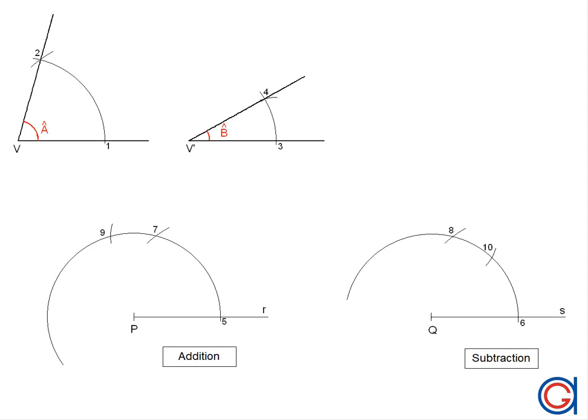So now finally, with our set square we will join vertex P through point 9. This is the addition of angles A plus B. On ray S we join vertex Q through point 10, and this is the subtraction A minus angle B. So here you have learned how to add and subtract given angles using a compass and a set square. I hope you have enjoyed the video.